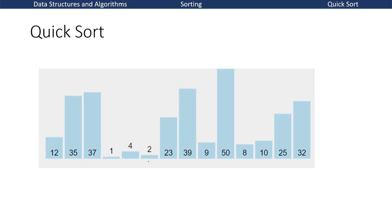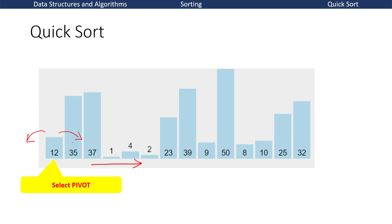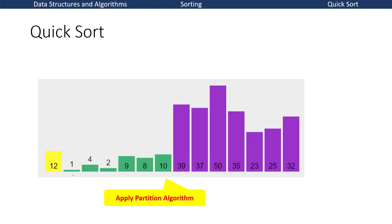Let's see the numbers of quick sort. This is an unsorted array. Quick sort will choose a pivot element, which by default is the leftmost side element. This pivot element will be considered, and then the partition algorithm will place elements smaller than pivot to the left side and bigger elements to the right side. When the partition algorithm is done, the array will look such that small elements are on one side and big elements on the other side.